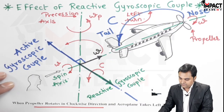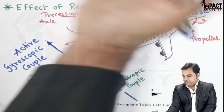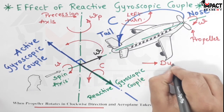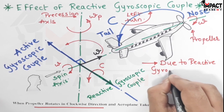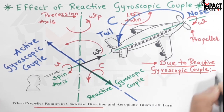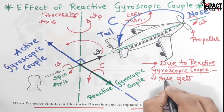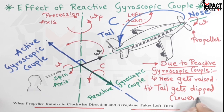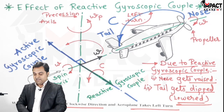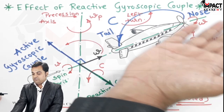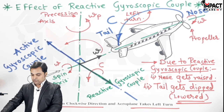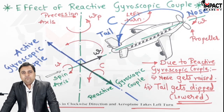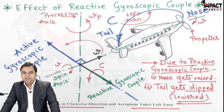The effect is that the nose gets raised and the tail is dipped because of this reactive gyroscopic couple. So the effect of the reactive gyroscopic couple is: the nose gets raised and the tail gets dipped or lowered. This is the effect for the given condition where the propeller is rotating clockwise and the plane is taking a left turn.